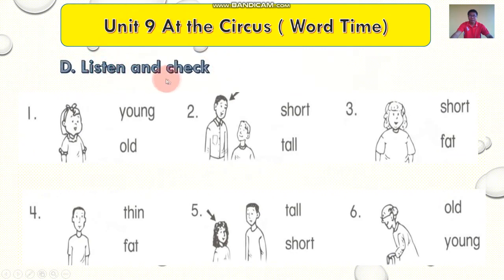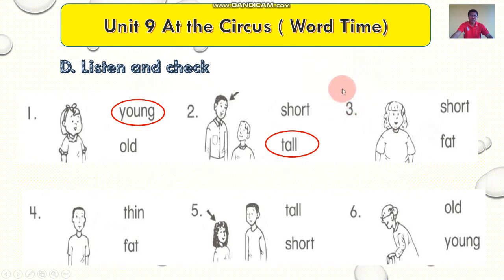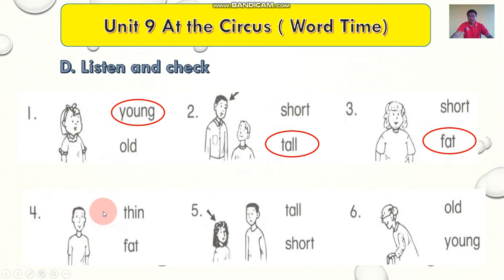Okay, everyone listen and check. Number one: young. Young. Yes, we call the word young. Number two: tall. Tall. Yes, we call the word tall. Number four: thin. Thin. Sự khó, thin. Phraya tha, skoom.